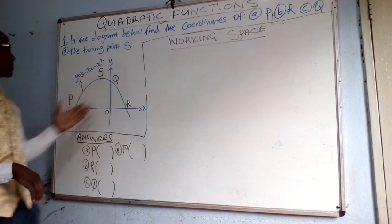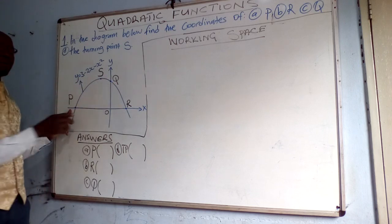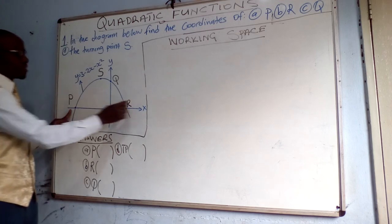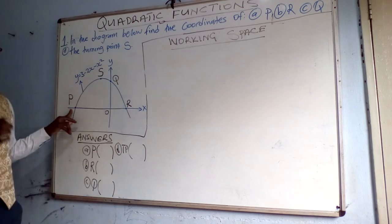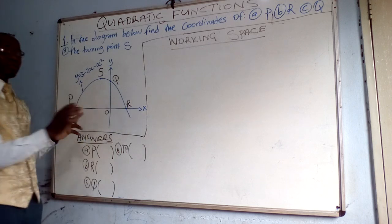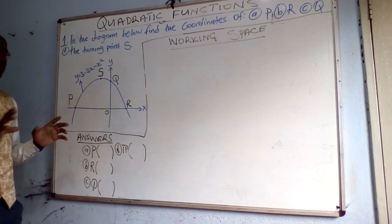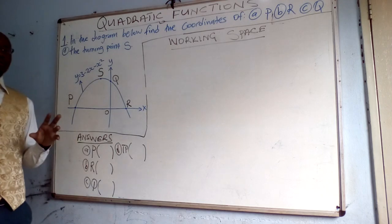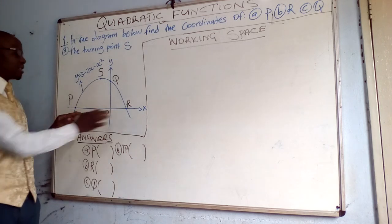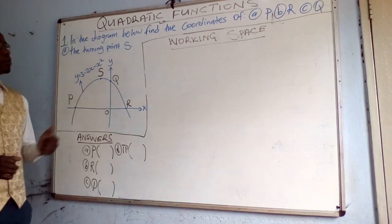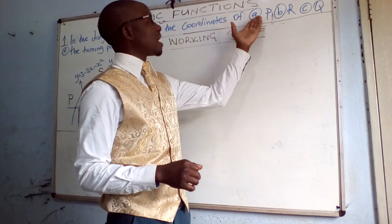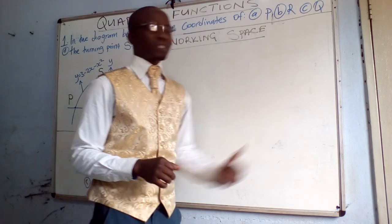Point P is a point at which the graph is cutting the x-axis. Point R is also another point where the graph is cutting the x-axis. At the point where the graph of y cuts the x-axis, it means that y is equal to 0 at that point, meaning at the two points P and Q, y is equal to 0. So we are asked to find the coordinates of P and the coordinates of R.